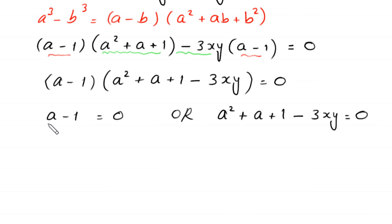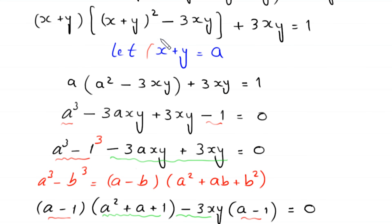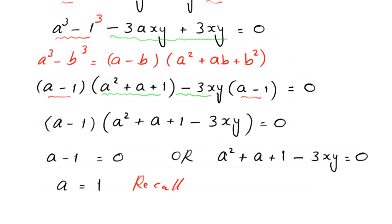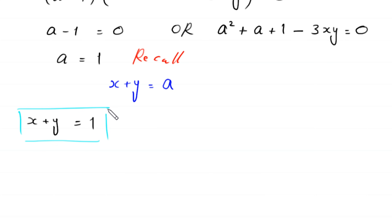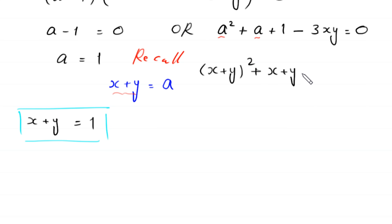From here, either a minus 1 equals 0, giving a equals 1, or a squared plus a plus 1 minus 3xy equals 0. Recalling that we set x plus y equal to a, the first solution is x plus y equals 1. Now for the second equation, we replace a with x plus y: x plus y whole squared plus x plus y plus 1 minus 3xy equals 0.